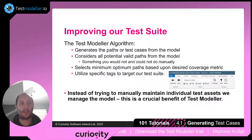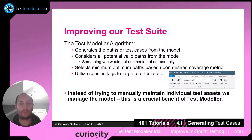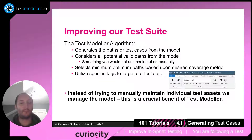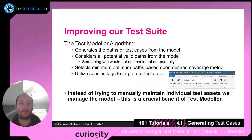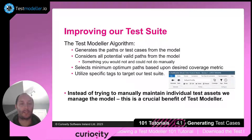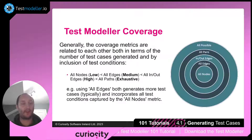Within Test Modeler, we have an algorithm that generates the paths or the test cases from the model. It considers all potential valid paths — something that typical humans can't do manually. We can select minimum, maximum, and the desired different coverage metrics. We can utilize specific tags to target our test suite if something within there needs extra special attention. Instead of trying to do this manually, we do this through our algorithm and through the model. This is a key benefit of what Test Modeler can provide.